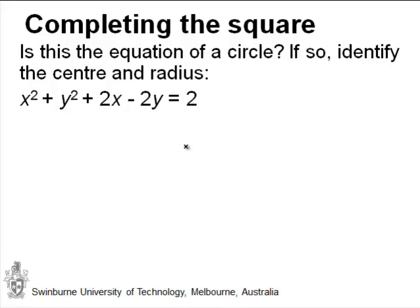In this case we've got x squared plus y squared plus 2x minus 2y is equal to 2. And if this was the equation of a circle, then we should be able to write it like this.